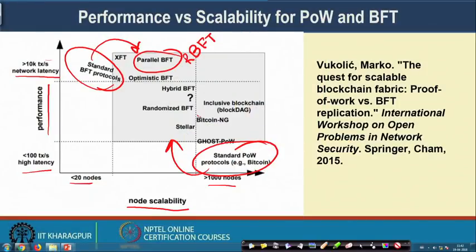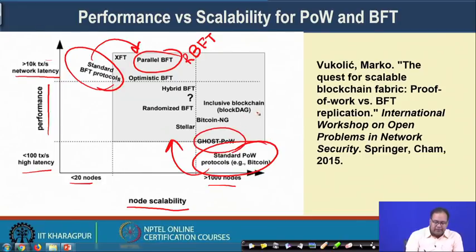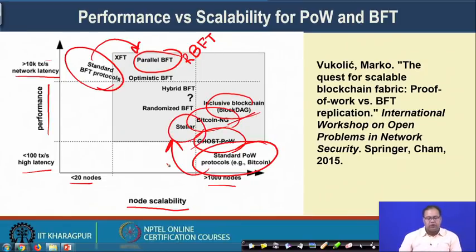For Proof of Work-based protocols, researchers are also looking at how to increase performance. In that direction there are multiple attempts such as GHOST PoW, Block DAG, Bitcoin NG, and the Stellar Consensus Protocol. We will look into Bitcoin NG in detail. Multiple such consensus protocols came from researchers at various levels, trying to find Proof of Work-based protocols that achieve more transaction scalability compared to standard Nakamoto consensus.